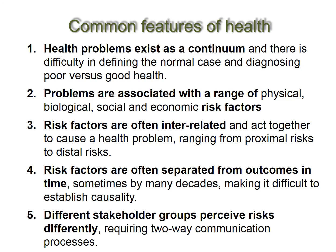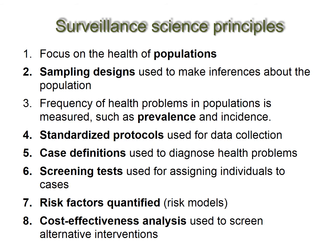The reason we focus on lessons from public health surveillance is that there are many common features between land health and public health. In public health there are problems in defining what is a normal case and a degraded state, particularly in mental health. Problems are associated with a range of biological, social, and economic risk factors that are often interrelated and act together. Risk factors are often separated from outcomes by many decades, and different stakeholder groups perceive risks very differently. These are all common problems to both human health and land health.